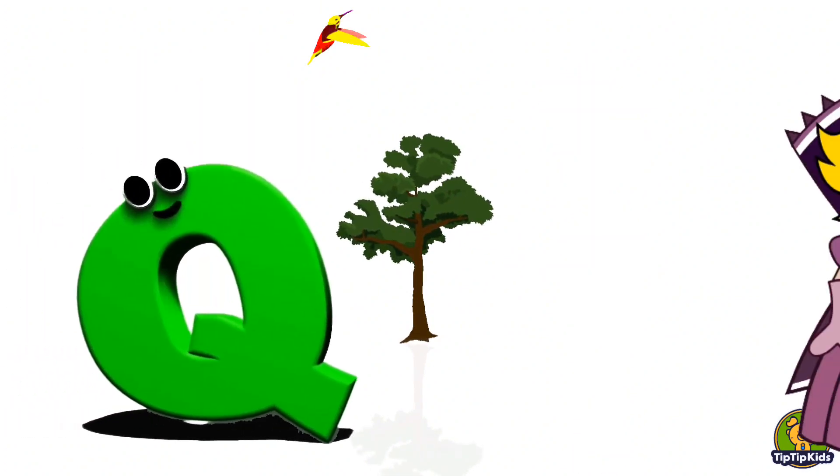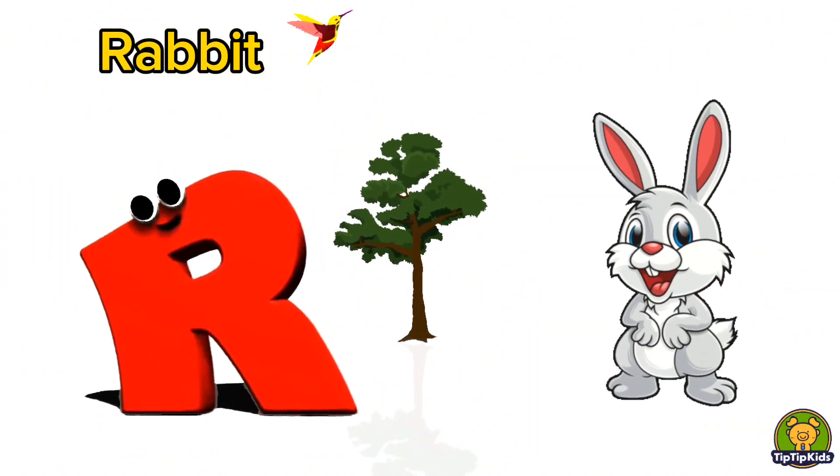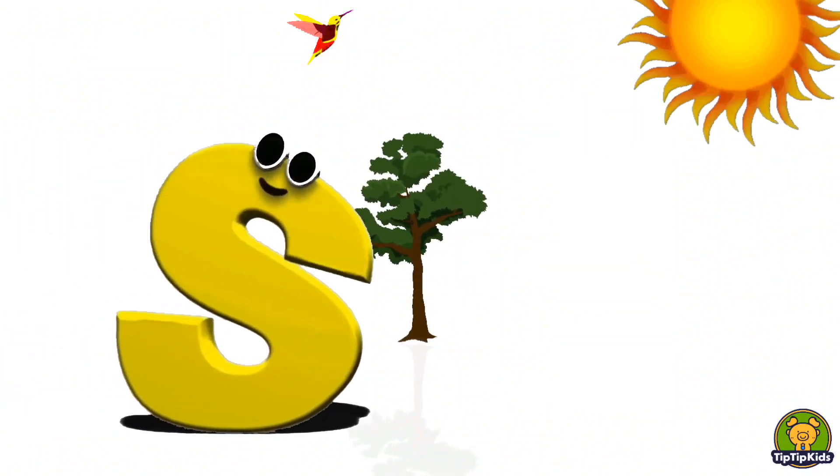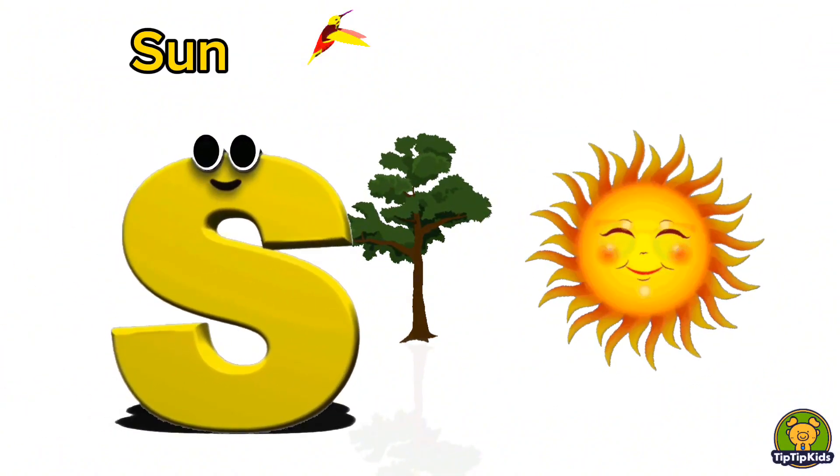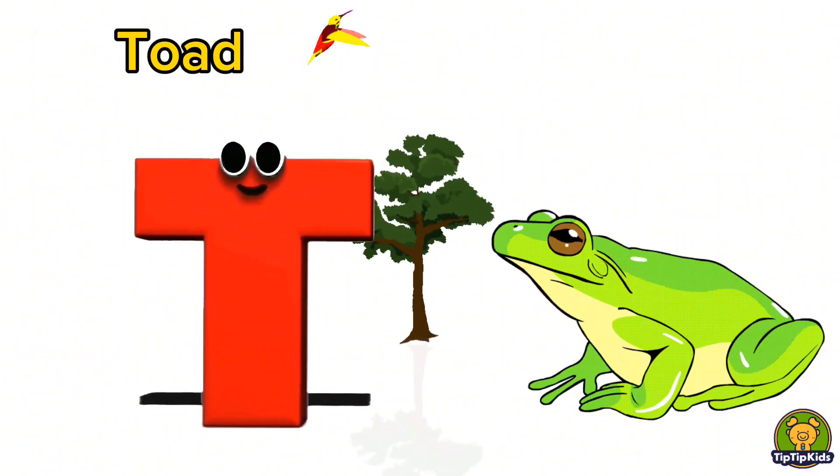Q is for Queen, Q-Q-Queen. R is for Rabbit, R-R-Rabbit. S is for Sun, S-S-Sun. T is for Toad, T-T-Toad.